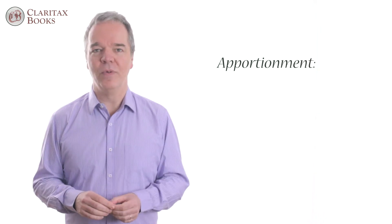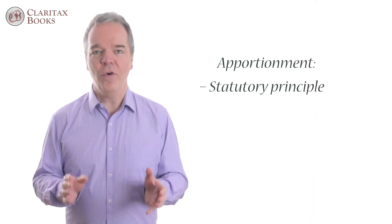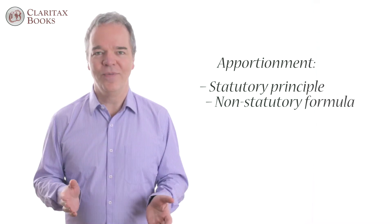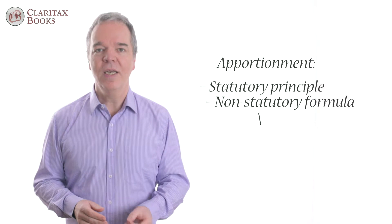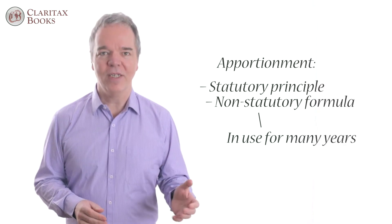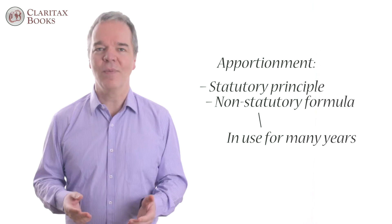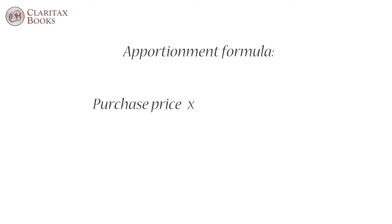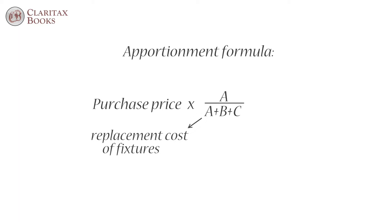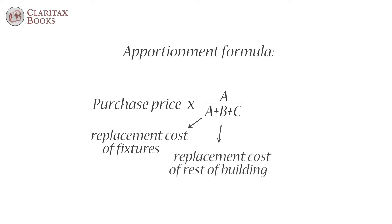Although the principle of the apportionment has a statutory foundation, the formula used to calculate it does not. Nevertheless, it is well accepted both by HMRC and by specialist surveyors advising clients on capital allowances issues. The apportioned value of the plant or machinery is calculated using the formula: purchase price × A / (A + B + C), where A is the replacement cost of qualifying items of plant or machinery, B is the replacement cost of the whole building excluding qualifying items of plant or machinery, and C is the bare site value.